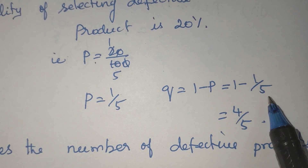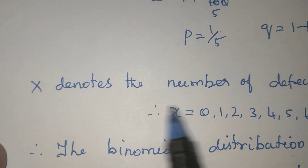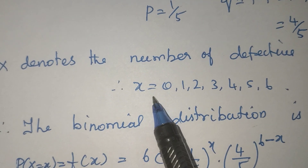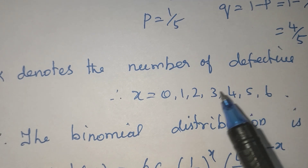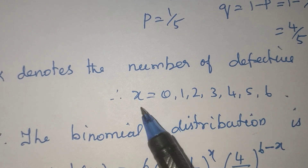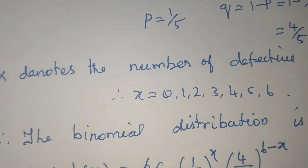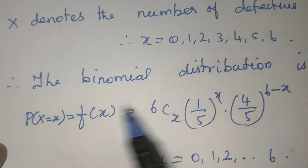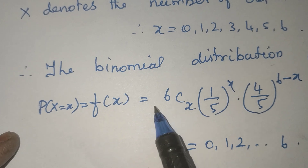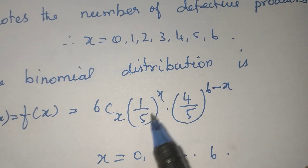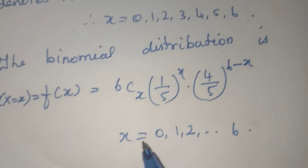5 minus 1 by 5 is equal to 4 by 5. X denotes the number of defective products. The binomial distribution formula is P(X = x) = 6Cx times (1/5)^x times (4/5)^(6-x).